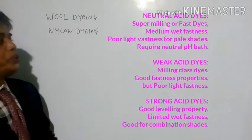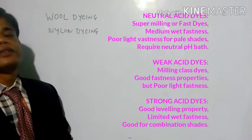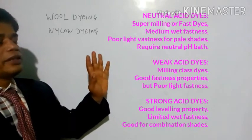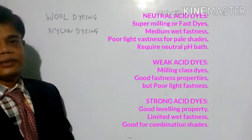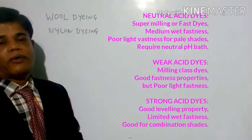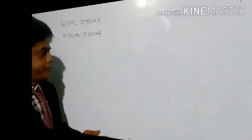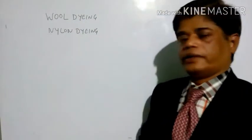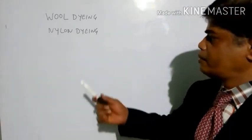The class of dyes selected for a particular textile material depends upon the efficiency of the fastness required — what fastness is required for that application. Based on that, the appropriate class of acid dyes is selected.